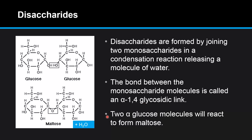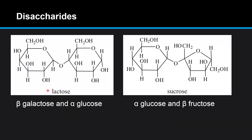Two alpha glucose molecules will react to form maltose. Here we have two more examples of disaccharides. Lactose is formed from beta galactose and alpha glucose. Sucrose is formed from alpha glucose and beta fructose, which is a five carbon sugar. Next we look at polysaccharides.